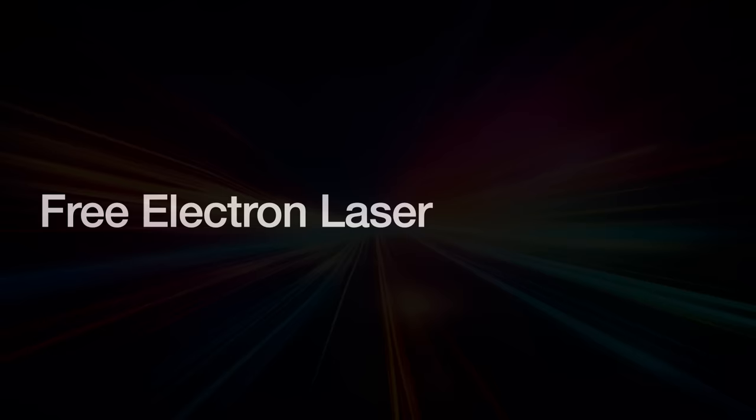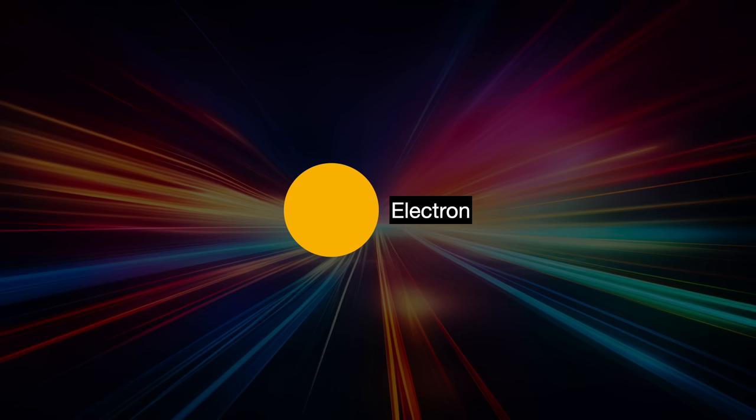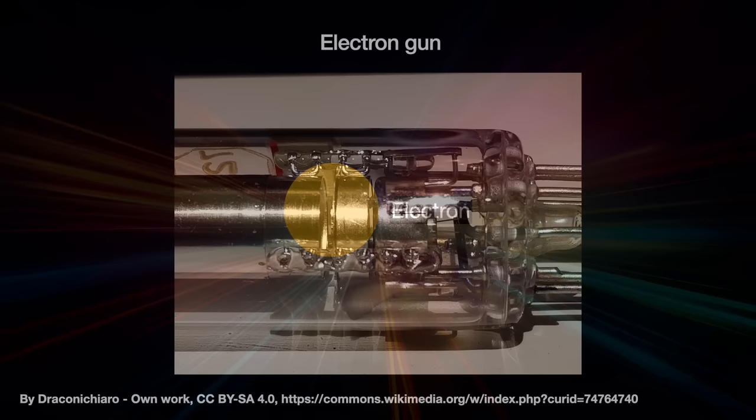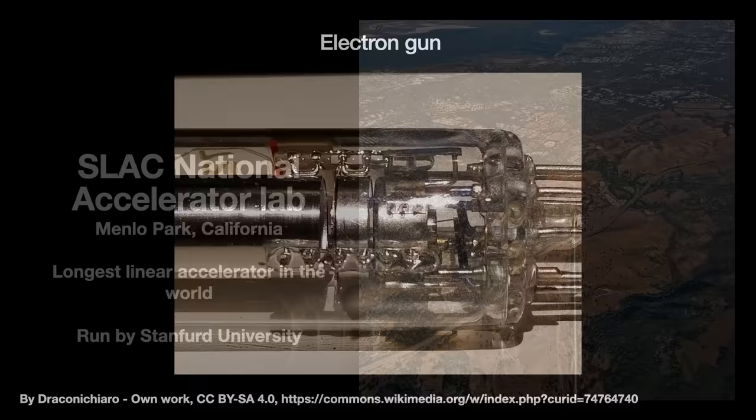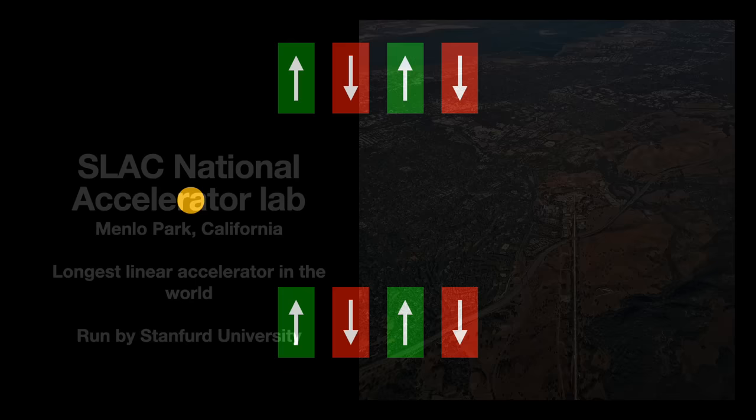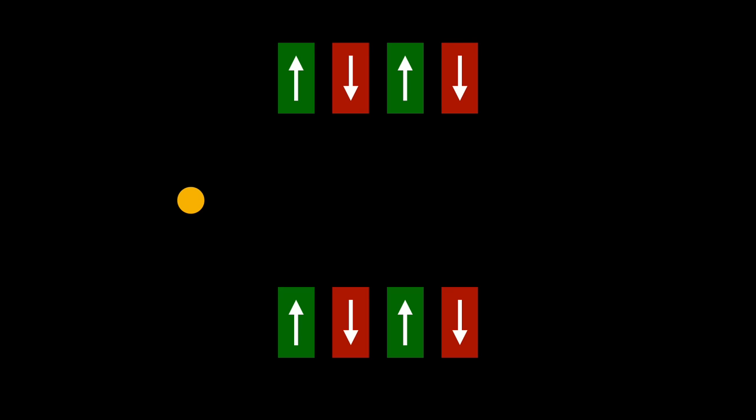A free electron laser generates light by oscillating charged particles, electrons mostly traveling at near the speed of light. We start with a powerful electron gun to create a beam of electrons. Then we use a linear accelerator to accelerate these electrons to near the speed of light. After that, we send the accelerated electrons into an alternating magnetic field like north-south, north-south, so on. Each magnet inside the field attracts the electrons, causing them to swerve towards it. This movement is an acceleration because acceleration can not only be a change in speed, but also a change in direction.